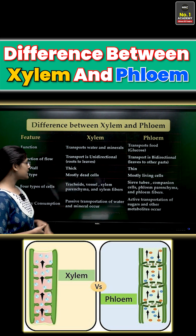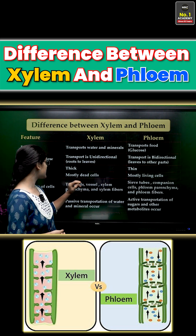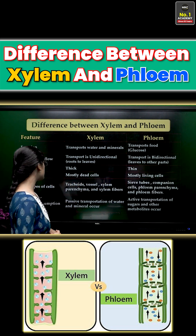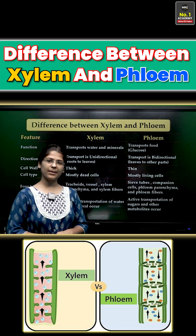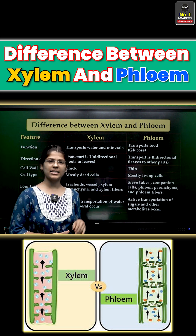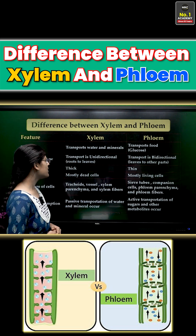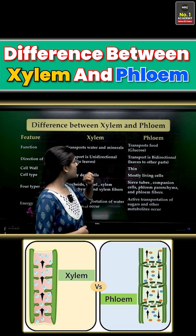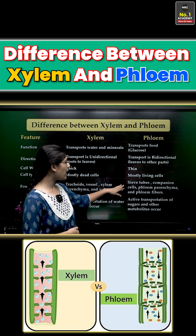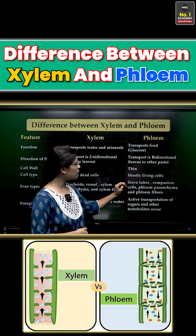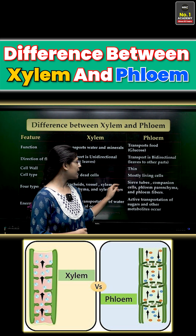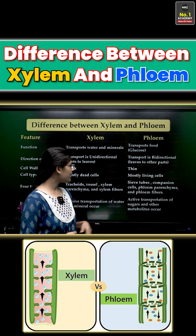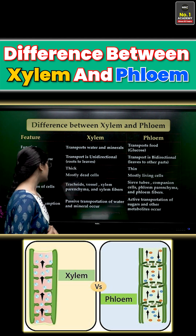The four types of cells present in xylem are tracheids, vessels, xylem parenchyma, and xylem fibres. The four types of cells present in phloem are sieve tubes, companion cells, phloem parenchyma, and phloem fibres.